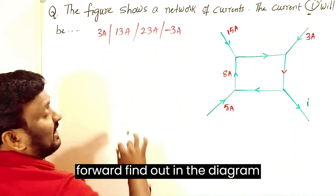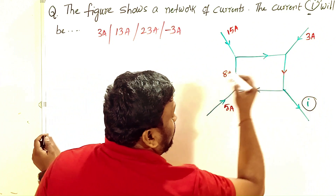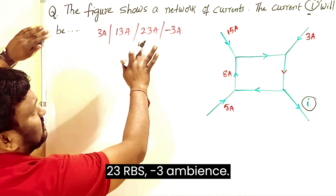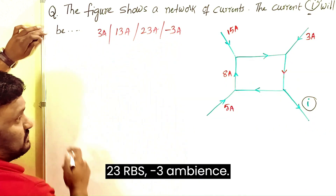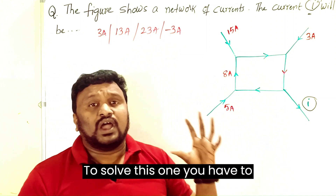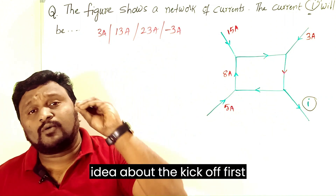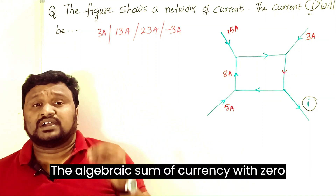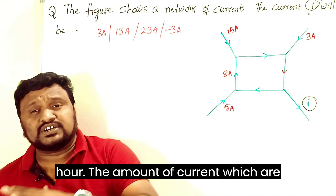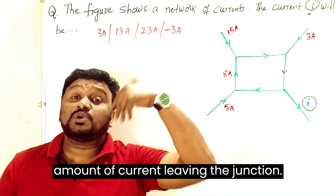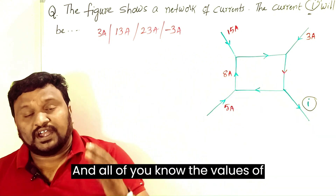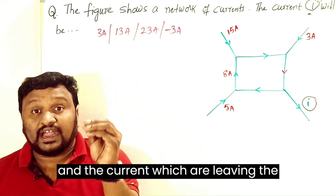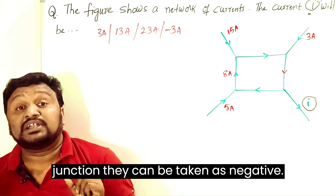How to use Kirchhoff's first law? At any junction, the sum of all currents should be zero, or the amount of current entering the junction equals the amount of current leaving the junction. The values of currents entering the junction can be taken as positive and the currents leaving the junction can be taken as negative.